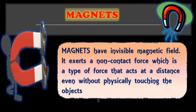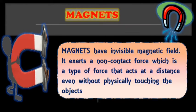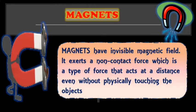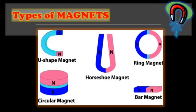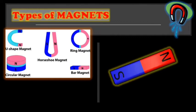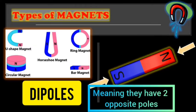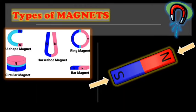Magnets have invisible magnetic field. It exerts a non-contact force which is a type of force that acts at a distance even without physically touching the objects. We have several types of magnets and its polarity. This can be in the form of U-shaped magnet, horse's shoe magnet, ring magnet, bar magnet, and circular magnet. One end of a magnet is called the South Pole while the opposite pole is called the North Pole. This is the reason while a magnet are called dipoles, meaning they have two opposite ends or poles. We have the North and we have the South.